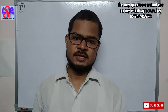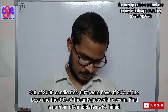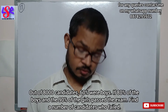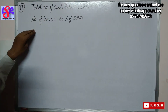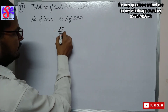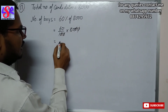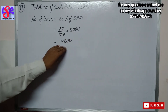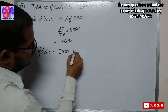Now let's move to question number 17. Out of 8000 candidates, 60% were boys. If 80% of the boys and 90% of the girls passed the examination, find the number of candidates who failed. Total candidates is 8000. Number of boys equals 60% of 8000, that is 60 upon 100 into 8000. Canceling, this gives 6 into 800, that is 4800 boys. Number of girls equals 8000 minus 4800, that is 3200.